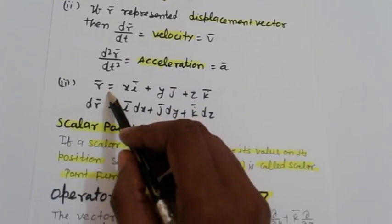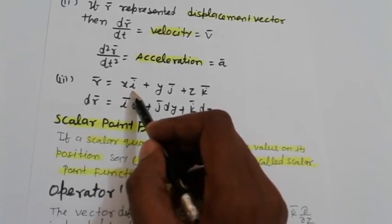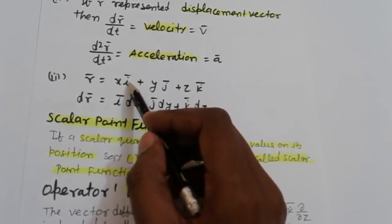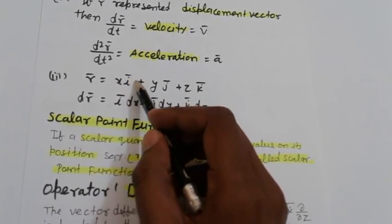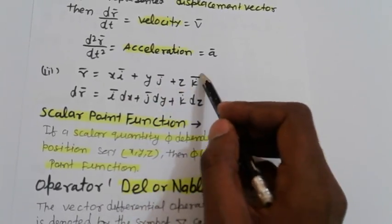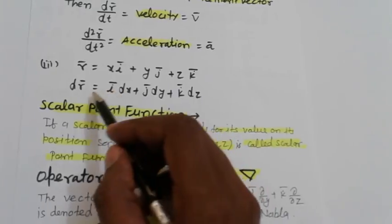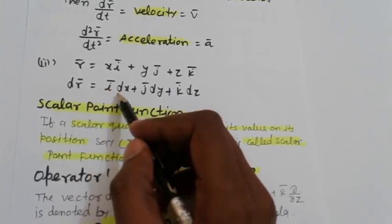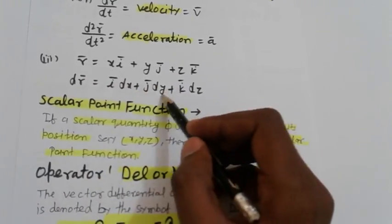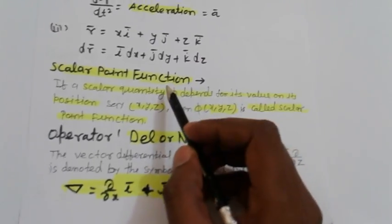If vector r is equal to x·i + y·j + z·k, where i, j, k are unit vectors, then dr is equal to dx·i + dy·j + dz·k, which is the derivative in component form.